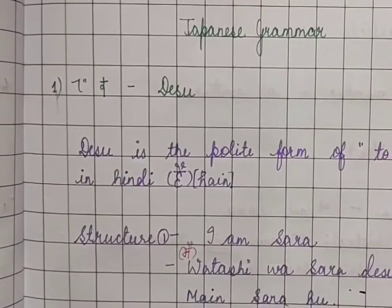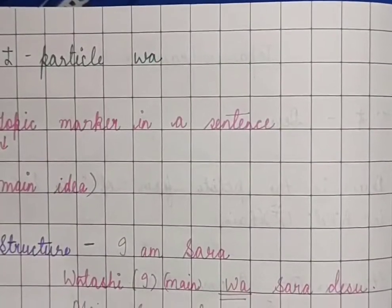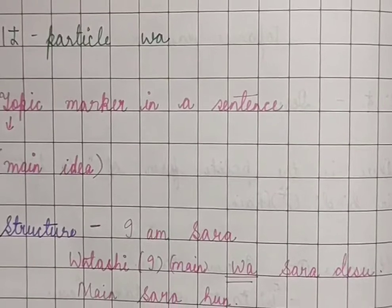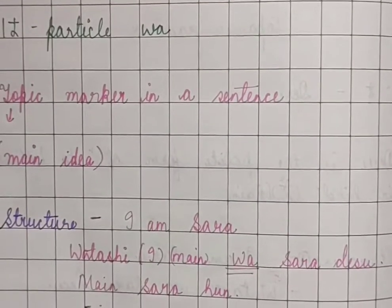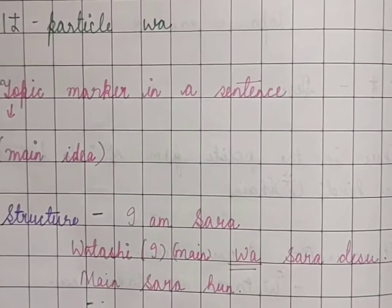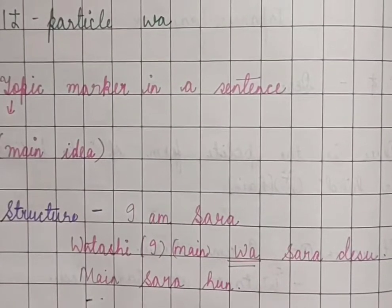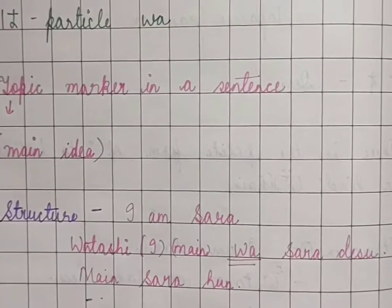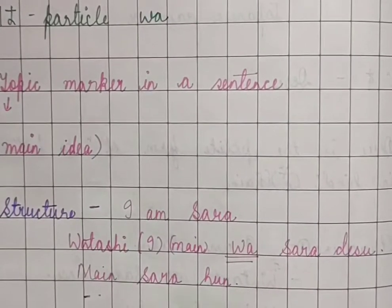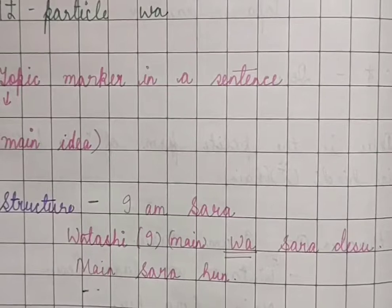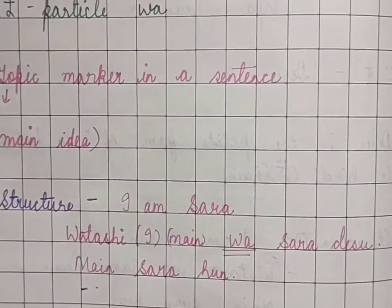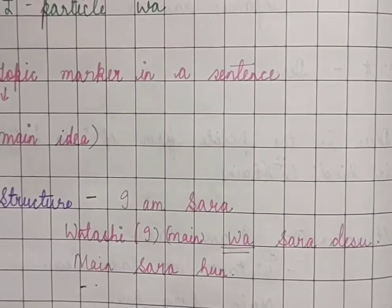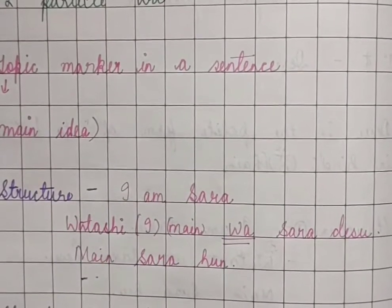Now let's go on to the next particle. Our next particle is the 'wa' particle. These two particles — desu and wa — will help you understand basic Japanese sentences very simply. What is the wa particle? Wa is a topic marker in a sentence. A topic marker means the main idea — when we write a paragraph or a sentence, the main idea is what we are talking about.